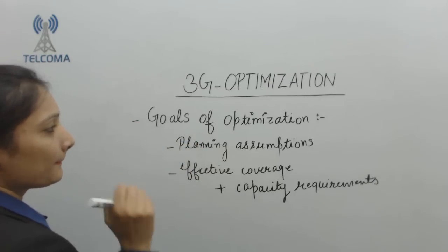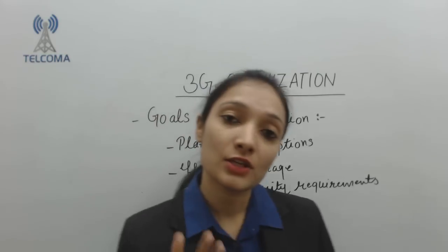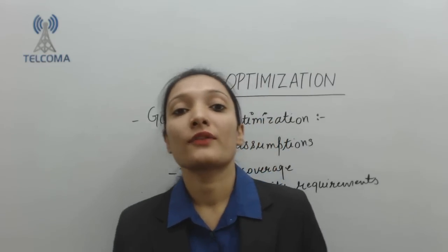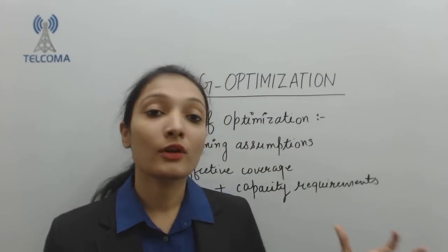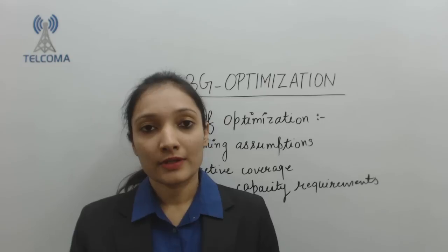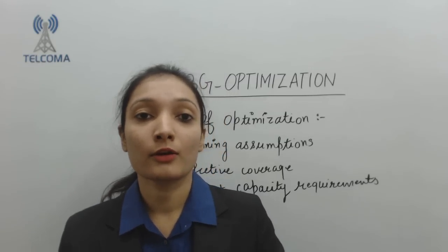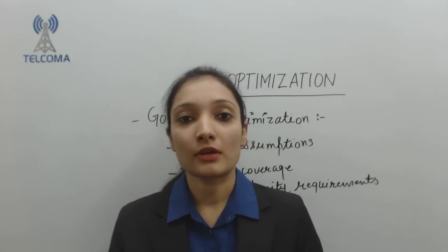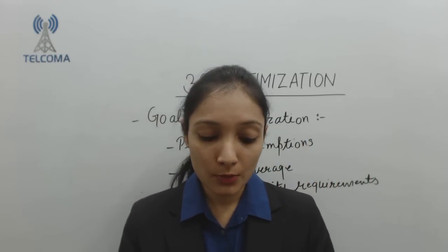We need to optimize the network because there could be some deviations from the planning assumptions. There could be changes in the behavior of the subscriber, or changes in the behavior of the environment. For example, if you deployed a site in a particular year, after one or two years the surrounding conditions may change — there could be more obstructions, buildings, or terrain — and that could affect the performance of the system.